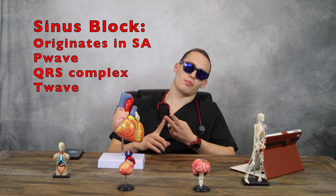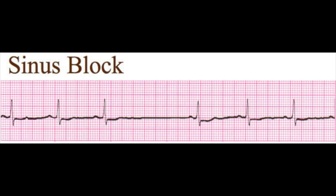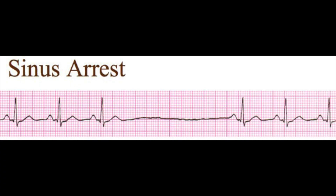Moving on to sinus block — it's still originating in the SA node. It still has a P wave, QRS complex, and T wave. Sinus block is when an impulse in the SA node is completely blocked. There will be a period of time on the ECG where it's just flatlined, and then it starts back up, as you can see on screen.